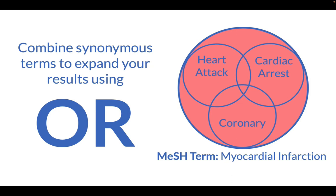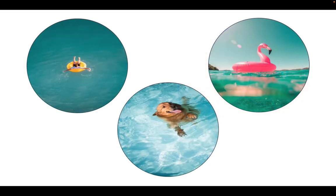You will need to go through the same systematic process using OR to combine synonymous terms for your other topics as well — coming up with synonymous terms for adult women and ORing them together, and then the same process for statins. Think of this as making three big pools of articles for each of our three topics.